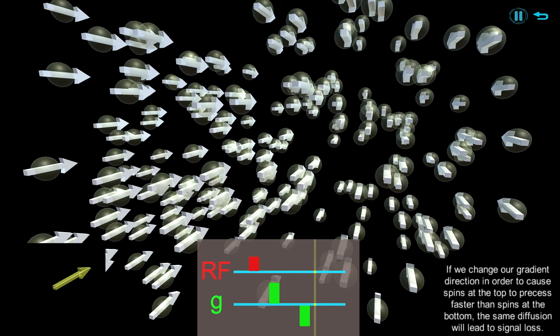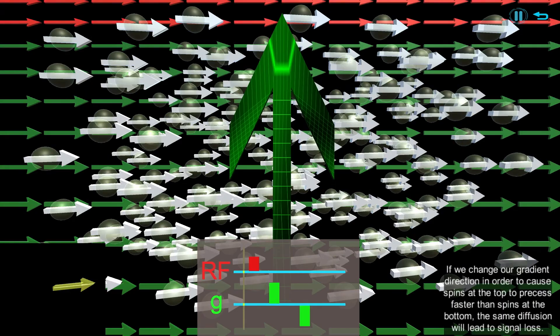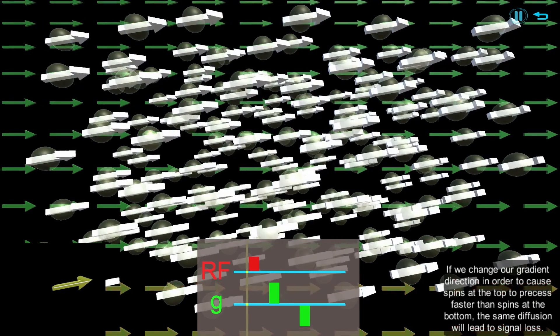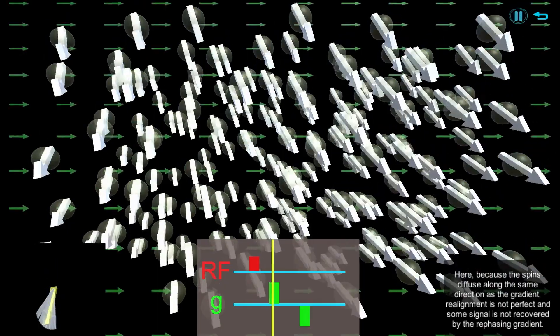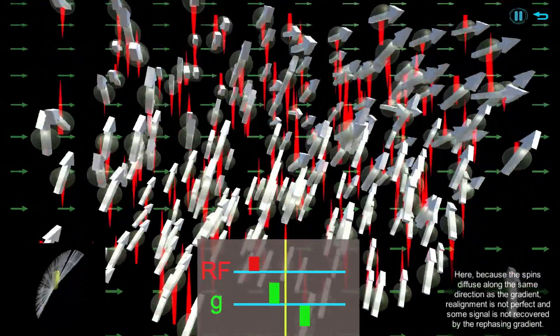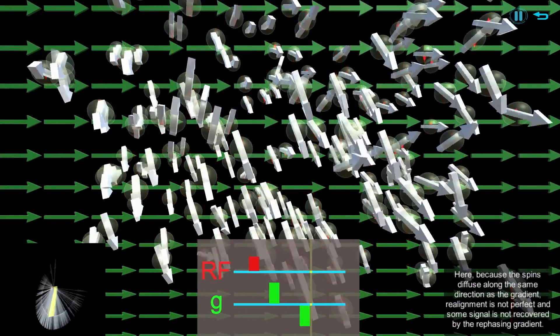If we change our gradient direction in order to cause spins at the top to precess faster than spins at the bottom, the same diffusion will lead to signal loss. Here, because the spins diffuse along the same direction as the gradient, realignment is not perfect and some signal is not recovered by the rephasing gradient.